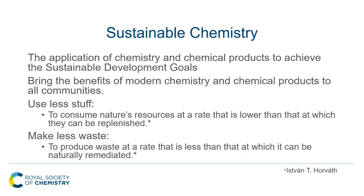Sustainable chemistry is the application of chemistry and chemical products to achieve the Sustainable Development Goals. But while we're doing this, we need to use less stuff — consume nature's resources at a rate lower than that at which they can be replenished. And we have to make less waste — produce waste at a rate less than that at which it can be naturally remediated. If we can manage all these things together, we will be able to generate a sustainable society.